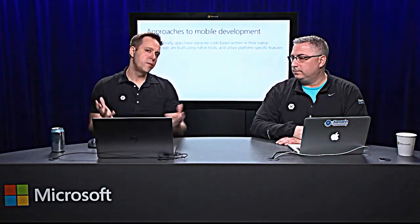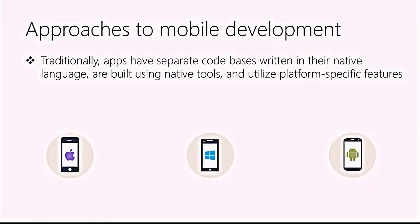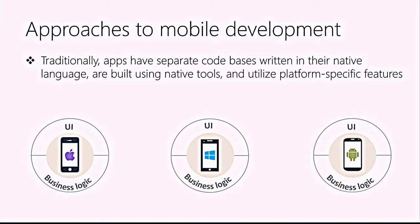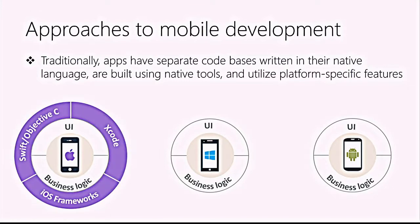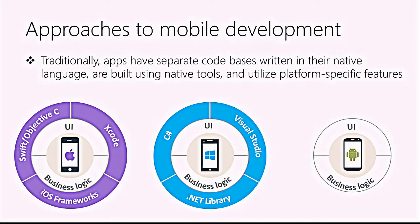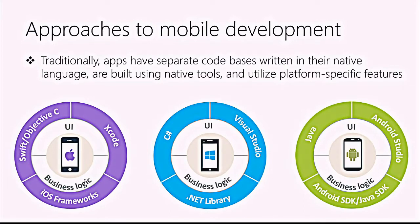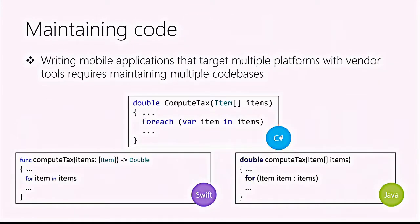Let's think about how we've been typically making applications. We've got three big mobile platforms, and if you want to hit all your users you need to target these major ecosystems. Using native tools means for iOS we use Xcode with Swift and Objective-C, for Windows we use Visual Studio with C# or other .NET languages, and for Android we use Android Studio with Java. But these are different development strategies and different languages, which means we're writing code three times — that's expensive and a code maintenance issue.